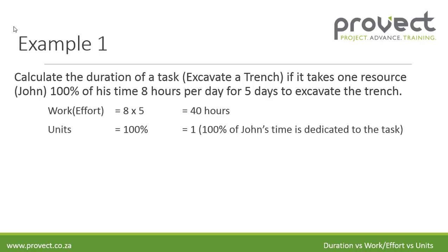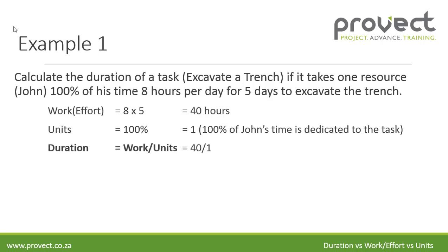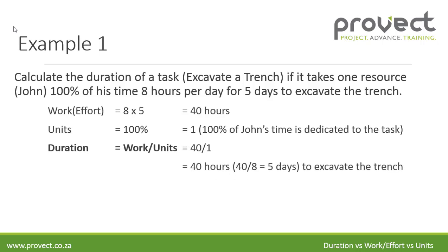The unit, which is the percentage, is 100% which equals one. The duration is work divided by units: 40 divided by one equals 40 hours. Forty hours divided by eight hours per day is five days. So it will take John, if he spends 100% of his time, five days to excavate the trench.